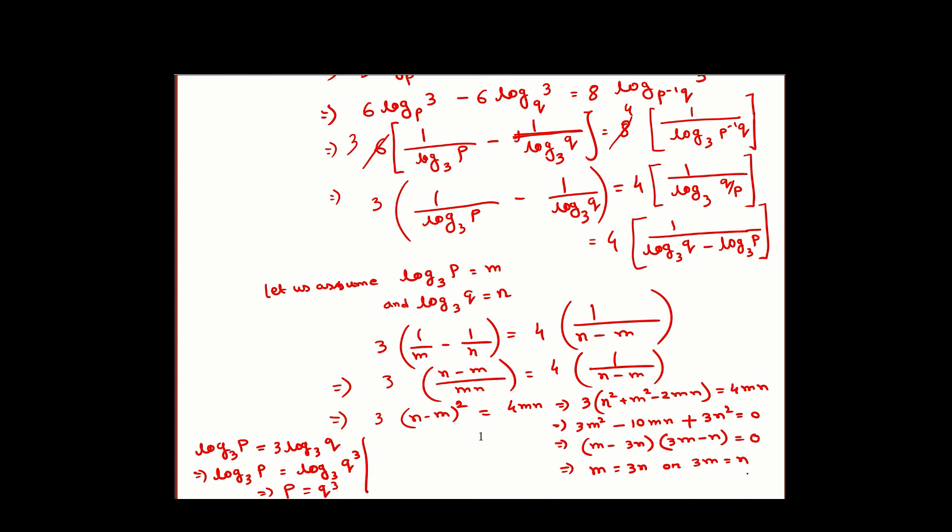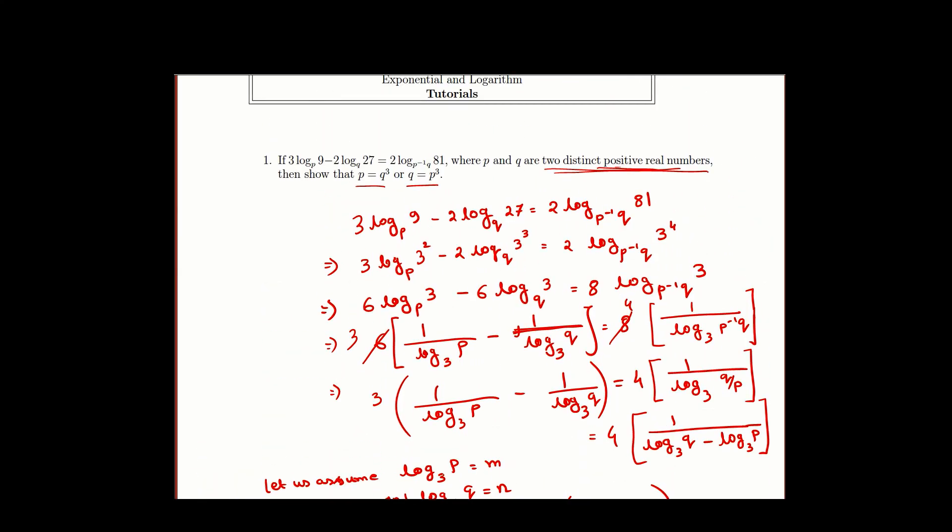And again, if we substitute in the other term, which is 3M equals N, we will get Q equals P cubed. This proves that for the given equation what we have started with, we get either P equals Q cubed or Q equals P cubed.